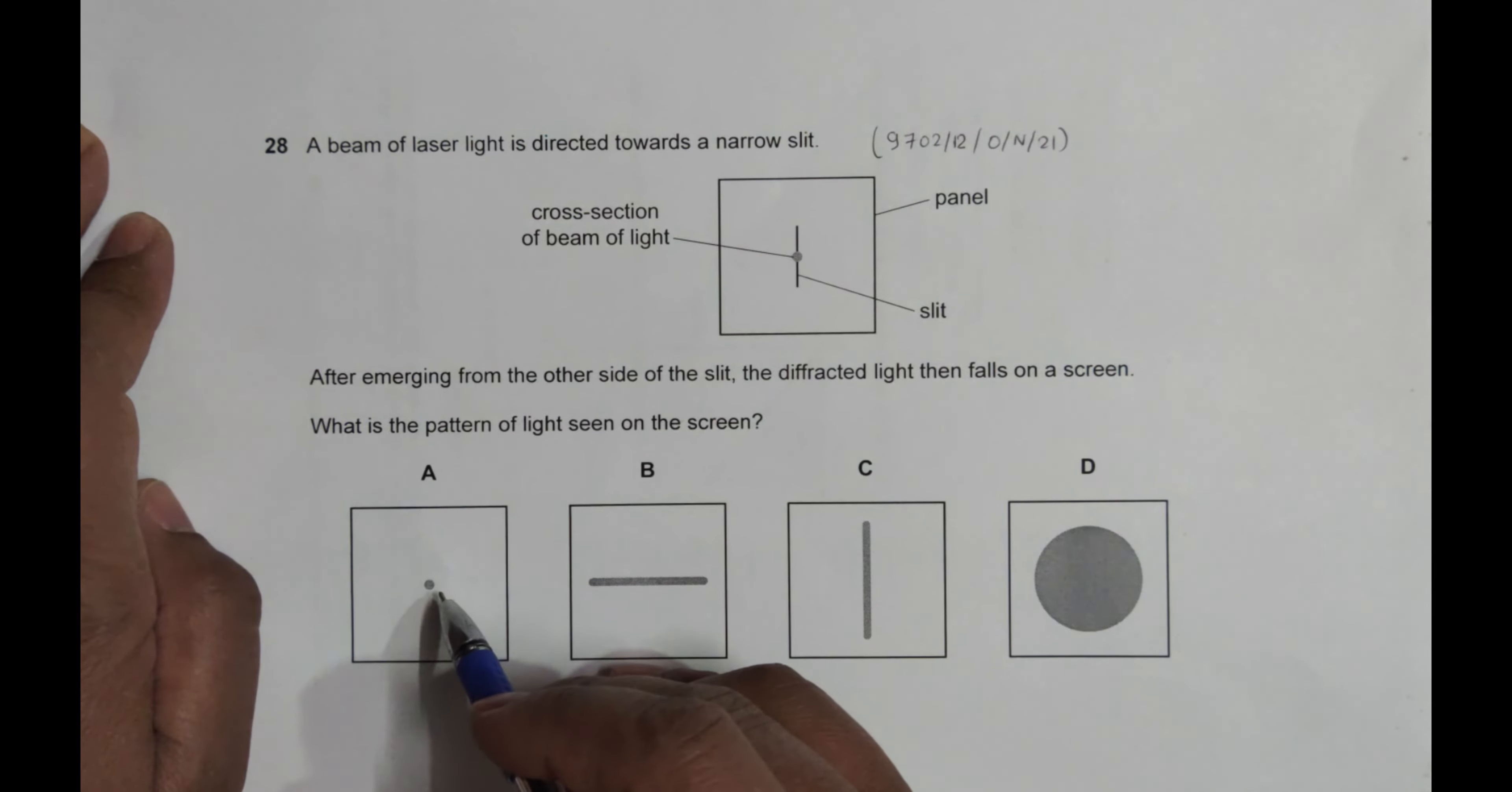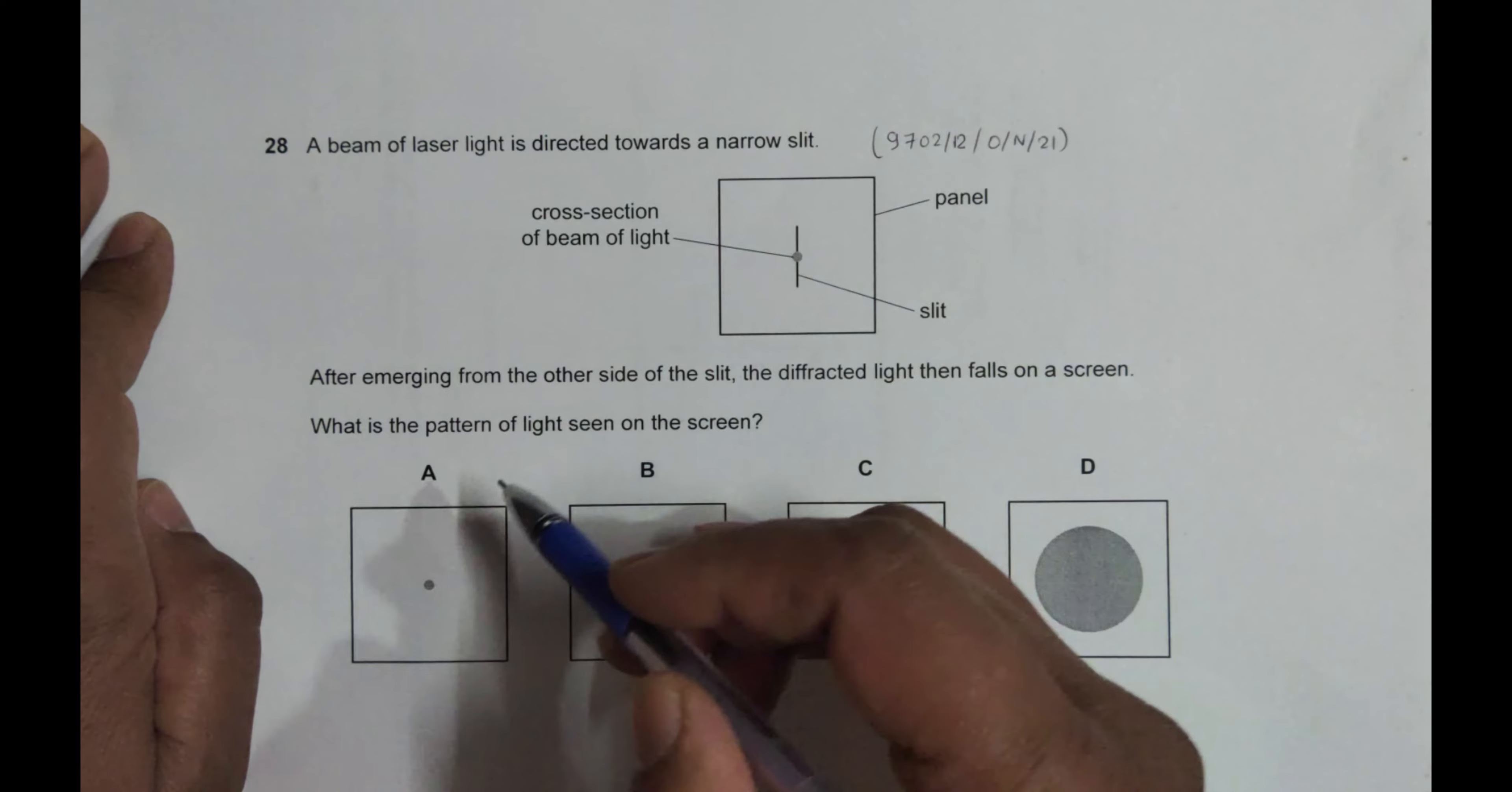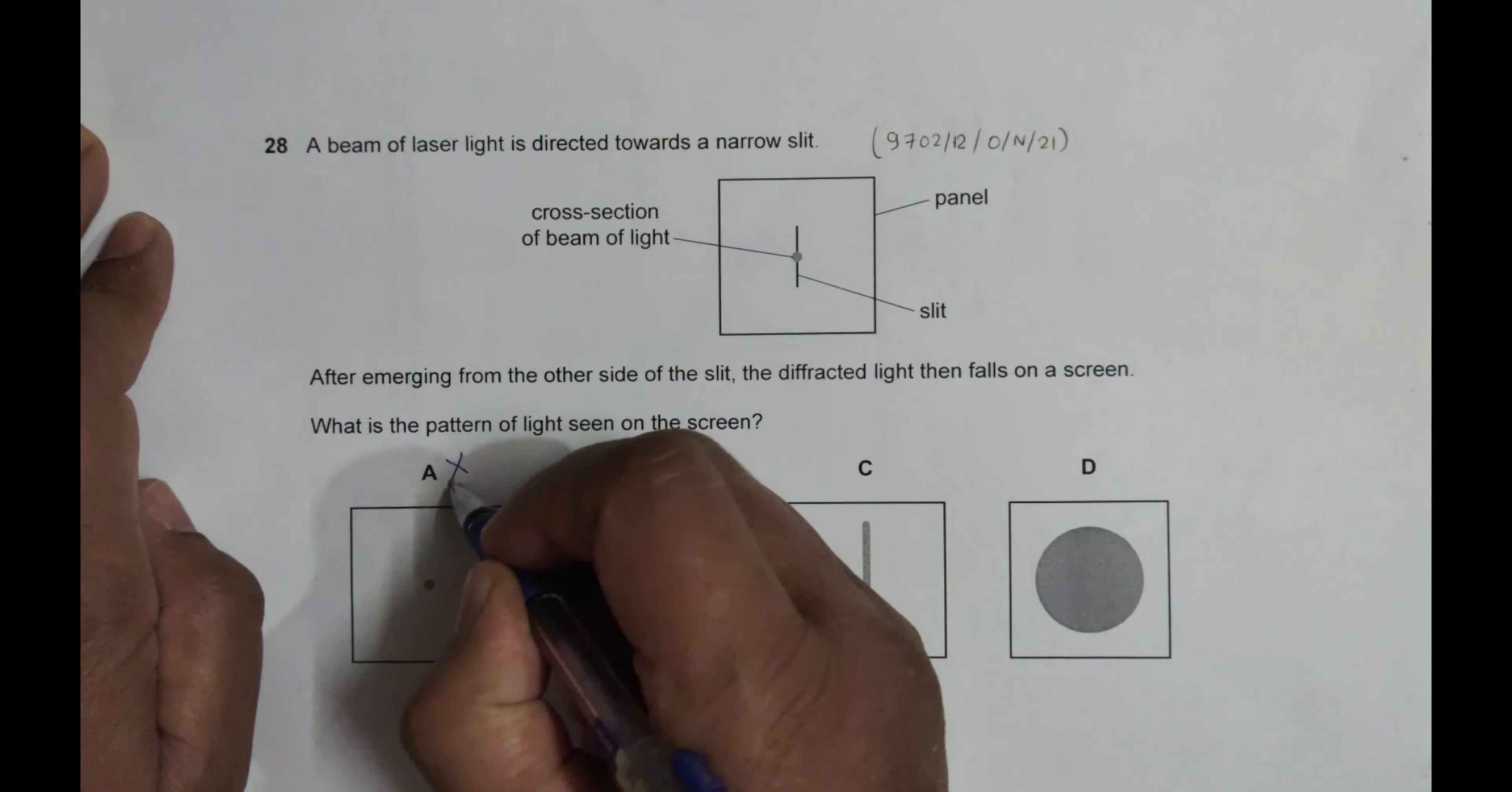So the first thing is, the first choice is wrong. It is simply the copy of the incident beam. So there is no spreading or even no converging of the beam. So choice A is wrong.